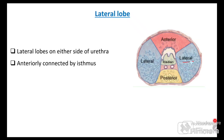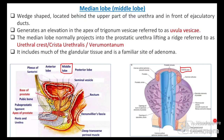The two lateral lobes lie on either side of the prostatic urethra, and anteriorly they are connected by the isthmus. The median lobe is the part lying above and in front of the ejaculatory duct. The median lobe projects into the posterior aspect of the urinary bladder, creating an eminence at the apex of the trigone called the uvula vesicae.